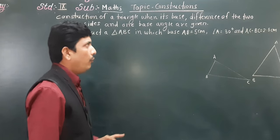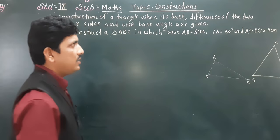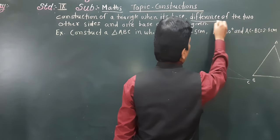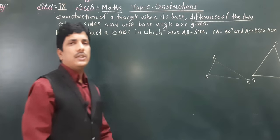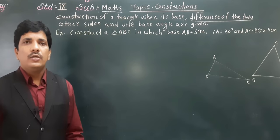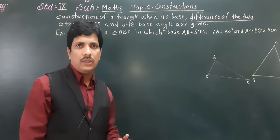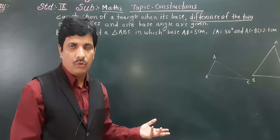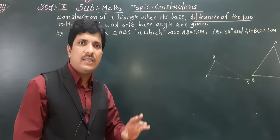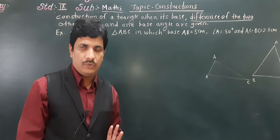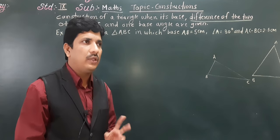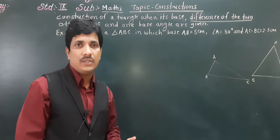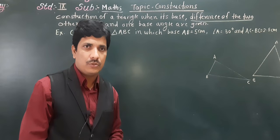So there are 2 types. When the difference of 2 sides is given, we need to see which side is greater and which side is shorter, and according to that we need to make changes in the construction.